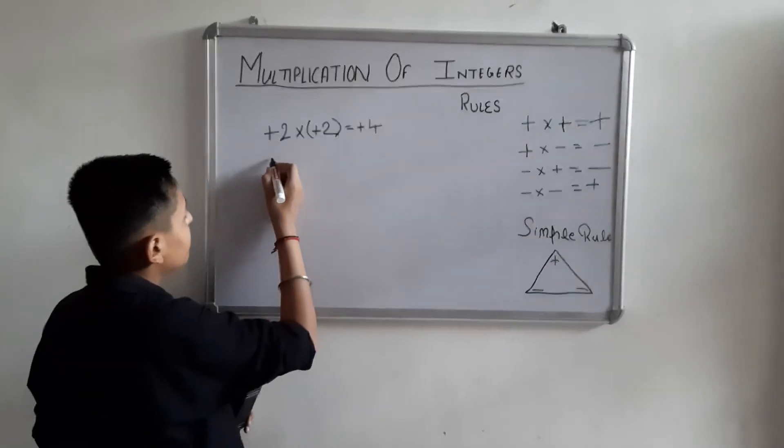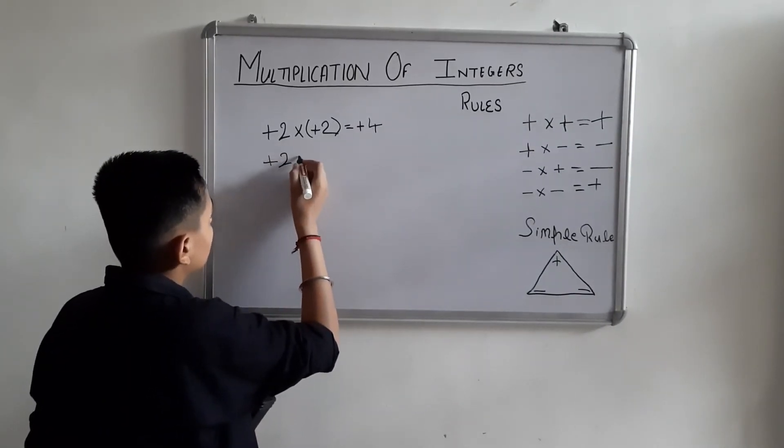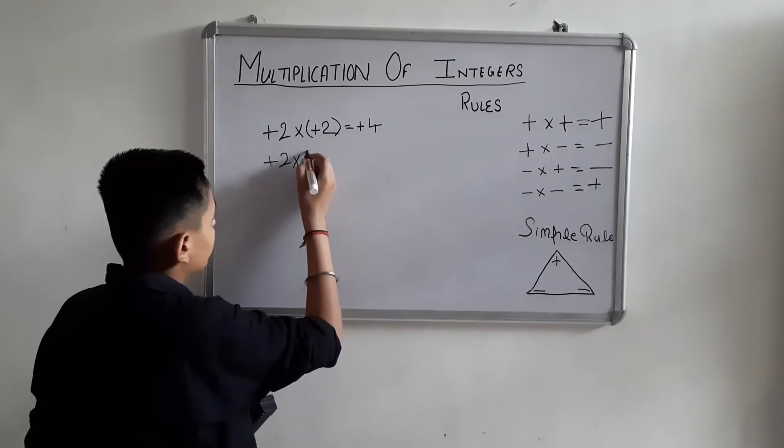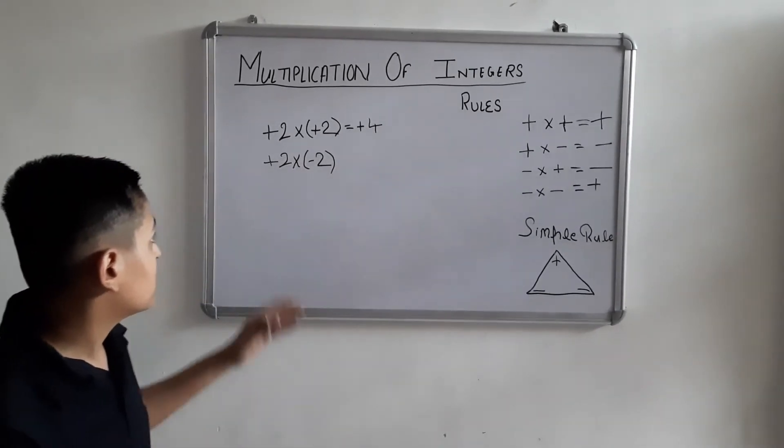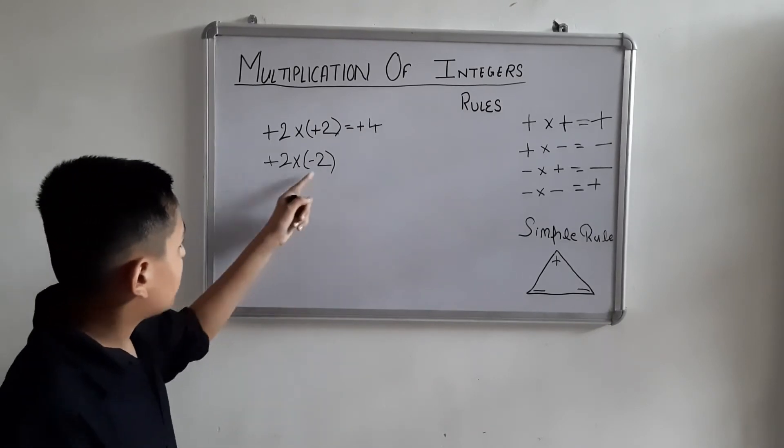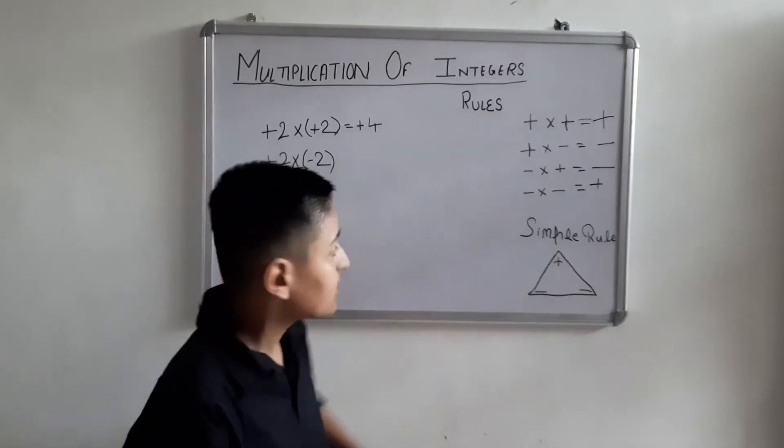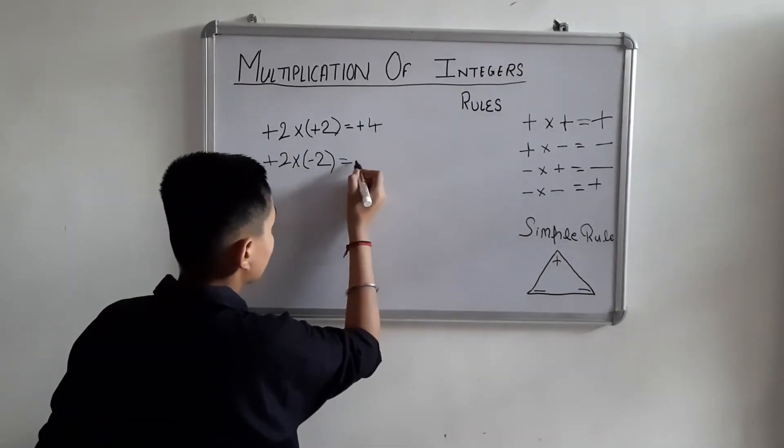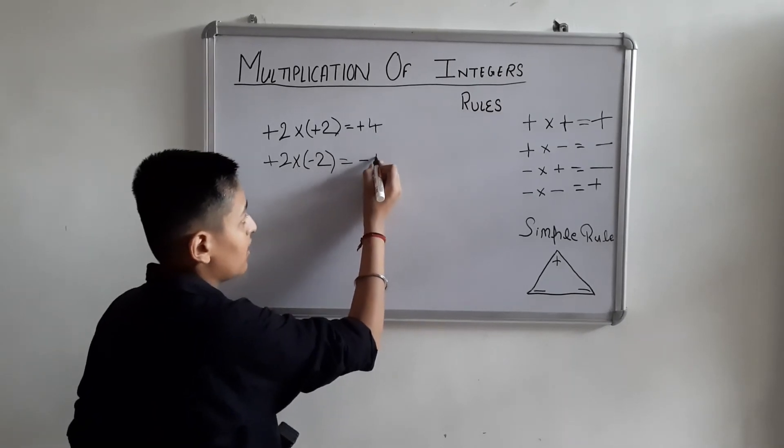Let's take another example: plus two into minus two. Plus into minus gives minus. Hide plus and minus, what's left is minus. Our answer will be minus. Two into two is four, so minus four.